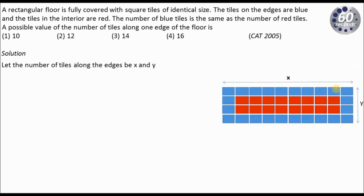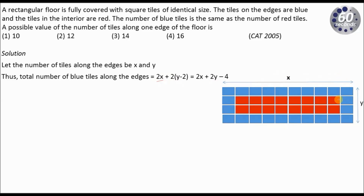The number of blue tiles: along this side we have X tiles and along this edge we have another X tiles, giving 2X. Plus, along the other two edges I will have Y tiles, but the corner tiles have already been counted, so I consider only Y minus 2 along each of those edges, giving 2 times (Y minus 2). On simplification it gives me 2X plus 2Y minus 4.